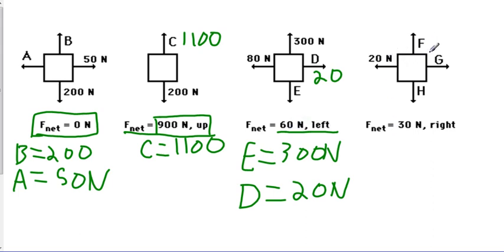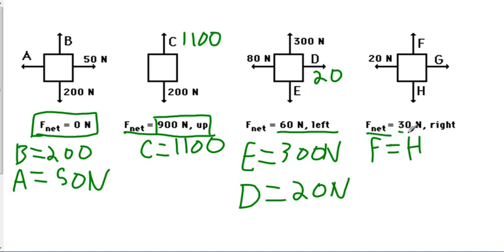In the last FBD example, we have 20 newtons going to the left, and vectors F, G, and H, with a net force of 30 newtons to the right. We don't know anything about the vertical, so all we can say is that vector F equals vector H — we don't know the value. For vector G, since we have 20 newtons left and a net force of 30 newtons right, G must be 50 newtons to the right.